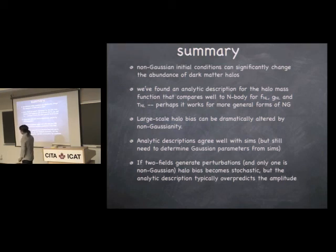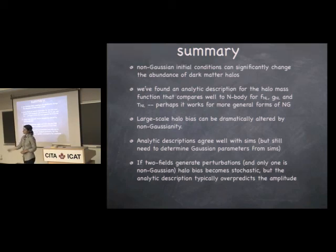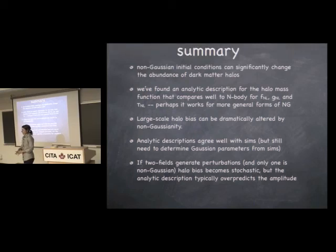The halo bias really only picks up the squeezed limit of the bispectrum, so things that have a small squeezed limit will not generate this type of scale-dependent bias. But people can certainly look for non-Gaussianity by looking for the full shape of the three- or four-point function in the microwave background.